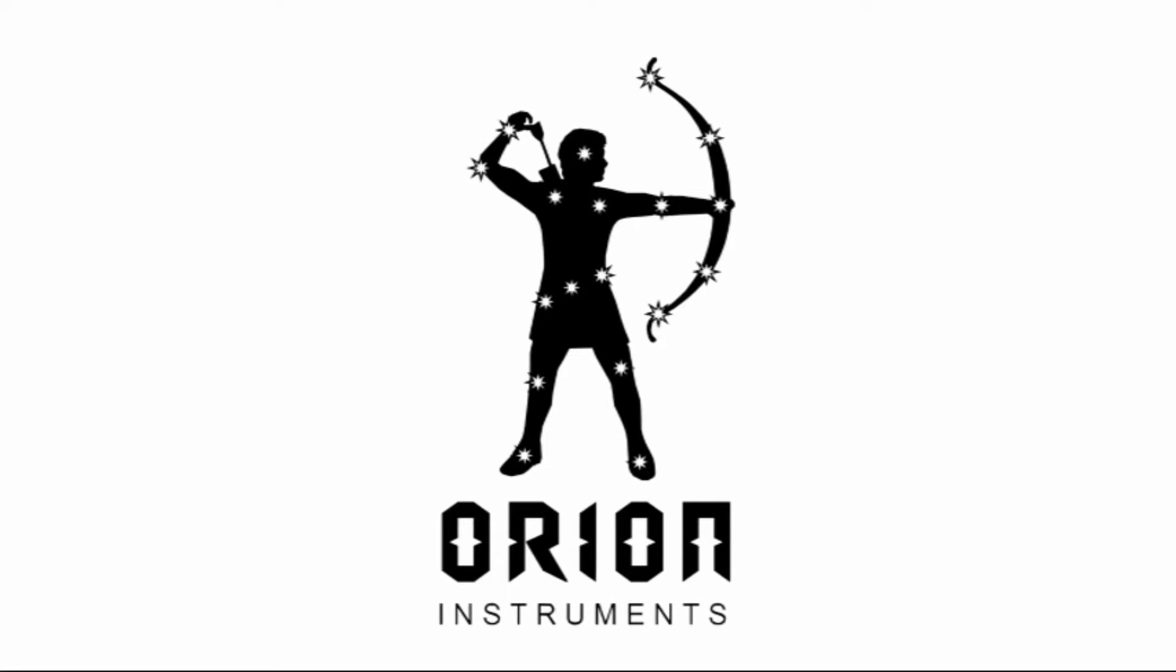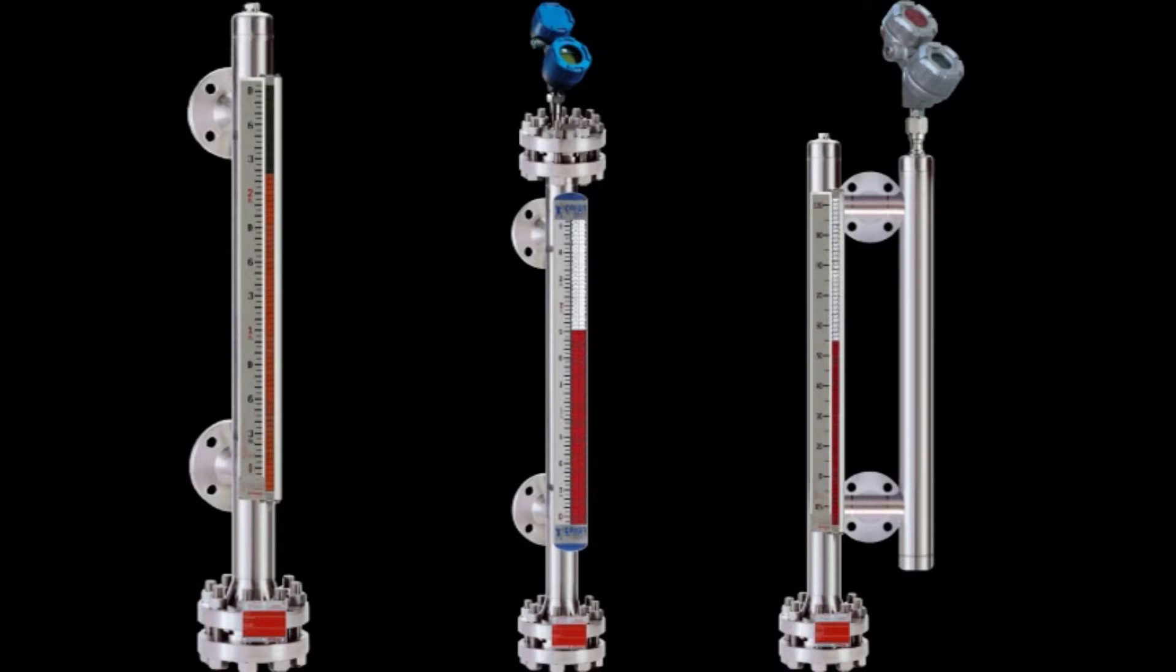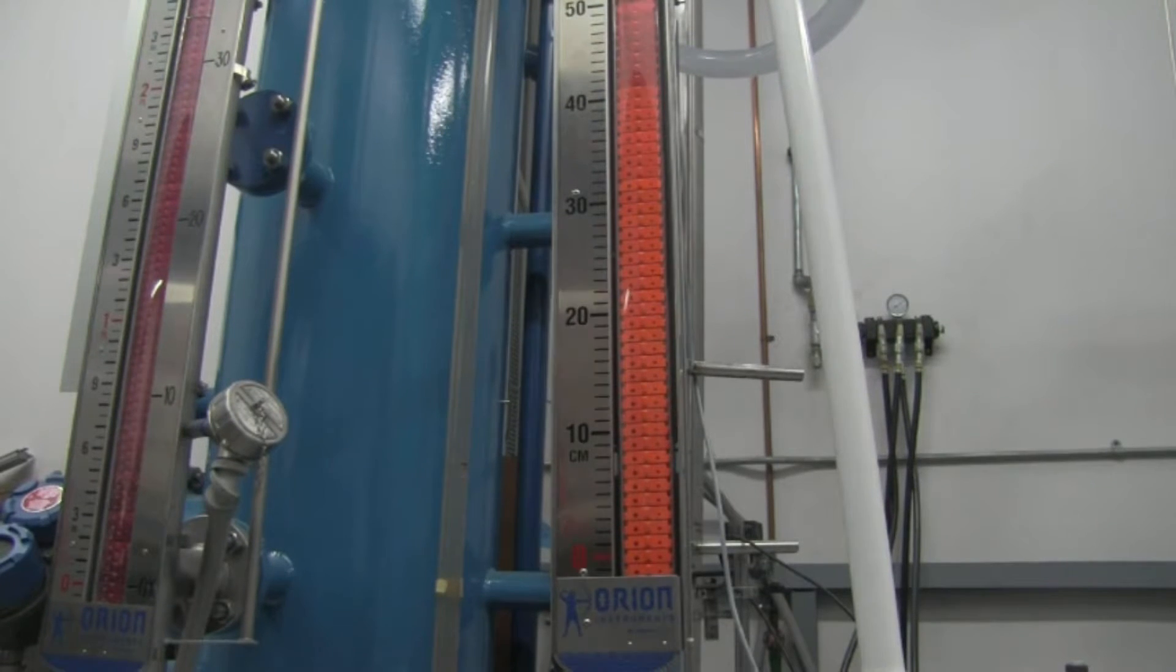Magnetically coupled liquid level indicators are in widespread use throughout today's process industries. Originally designed as an alternative to sight and gauge glass devices, MLIs are now commonly utilized in both new construction and plant expansions.